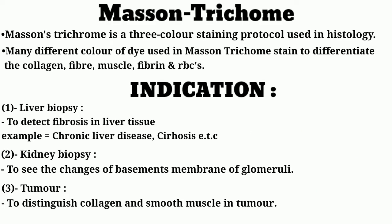Masson's Trichrome is a three-color staining protocol used in histology. Many different colors of dye are used in Masson's Trichrome stain to differentiate collagen, fiber, muscle, fibrin, and RBC.